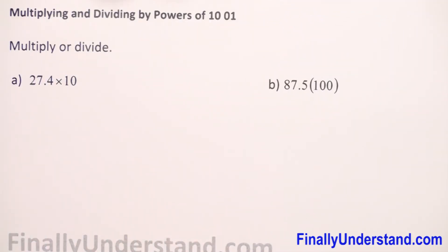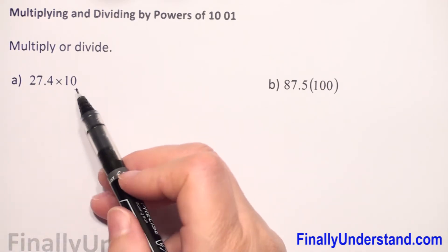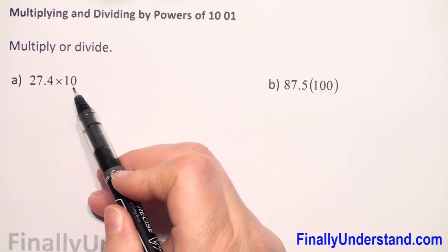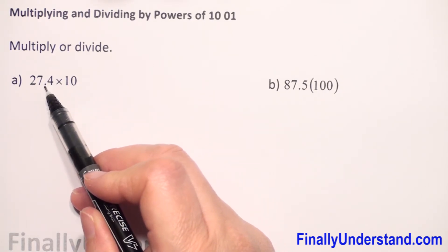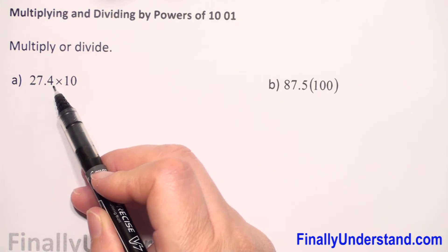In this example, first we have to multiply the decimal number 27.4 times 10. How do we do this? When we have to multiply a number by a power of 10, we have to count first how many zeros we have. Here we have one zero, so what it means is we have to move the decimal point one digit to the right.